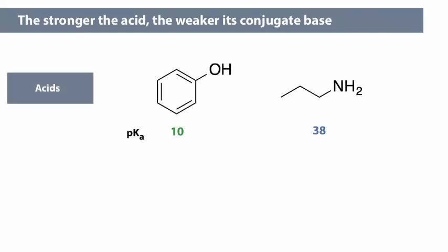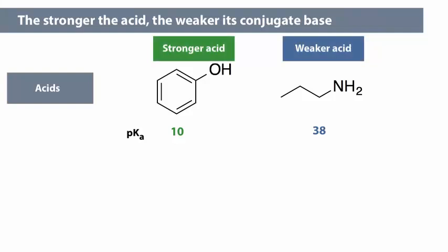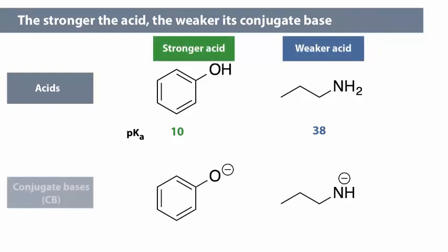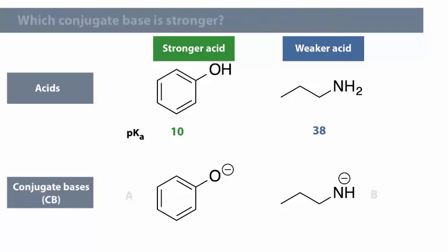For the two acids on screen, for which the pKa values are given, the phenol is the stronger acid. We can deprotonate each one and draw each conjugate base. Which conjugate base is stronger?